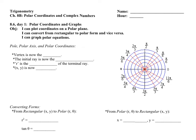Our final topic in trigonometry is Chapter 8B, Polar Coordinates. In this chapter, we're going to focus on the comparison of polar coordinates with what we're normally used to working with, rectangular coordinates.